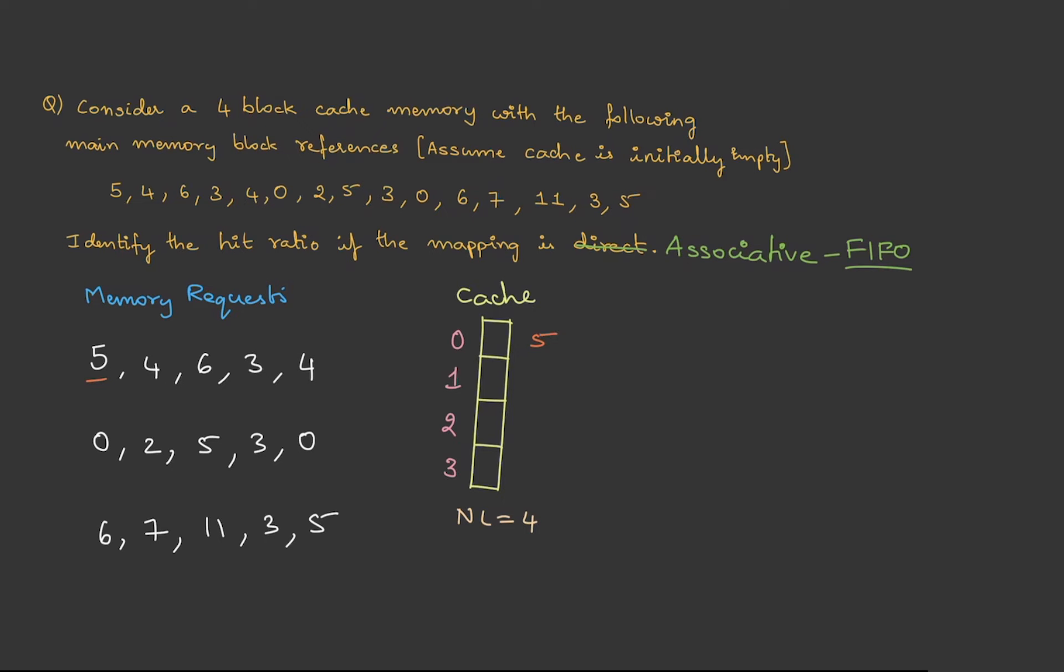So in first in first out, we go in a sequence. First request is 5, so 5 will be placed in line 0. Because it is not available, this is a miss. Then 4 goes to line 1, again a miss. Then 6 goes to line 2, miss. Again 3 goes to line 3, again a miss.